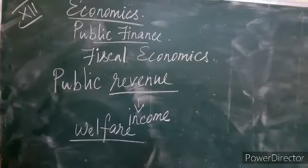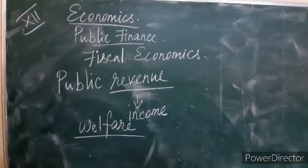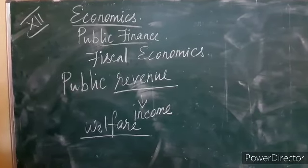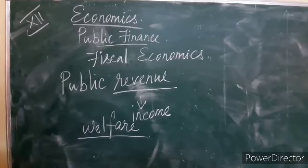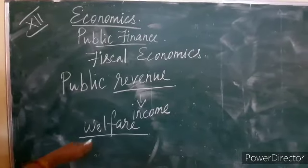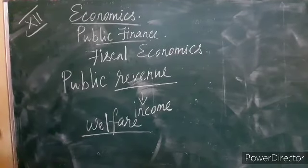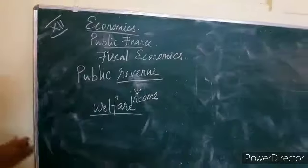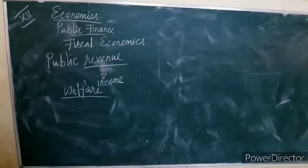If the government wants to spend more, it has to get more income. As I already told you, in private finance we fix expenses based on income, but the government first designs the expenditure and then raises its income. As the state is a welfare state, it has to do many welfare activities, and for those activities it needs revenue. So, how does it get its revenue? We are going to study this in the topic: public revenue.